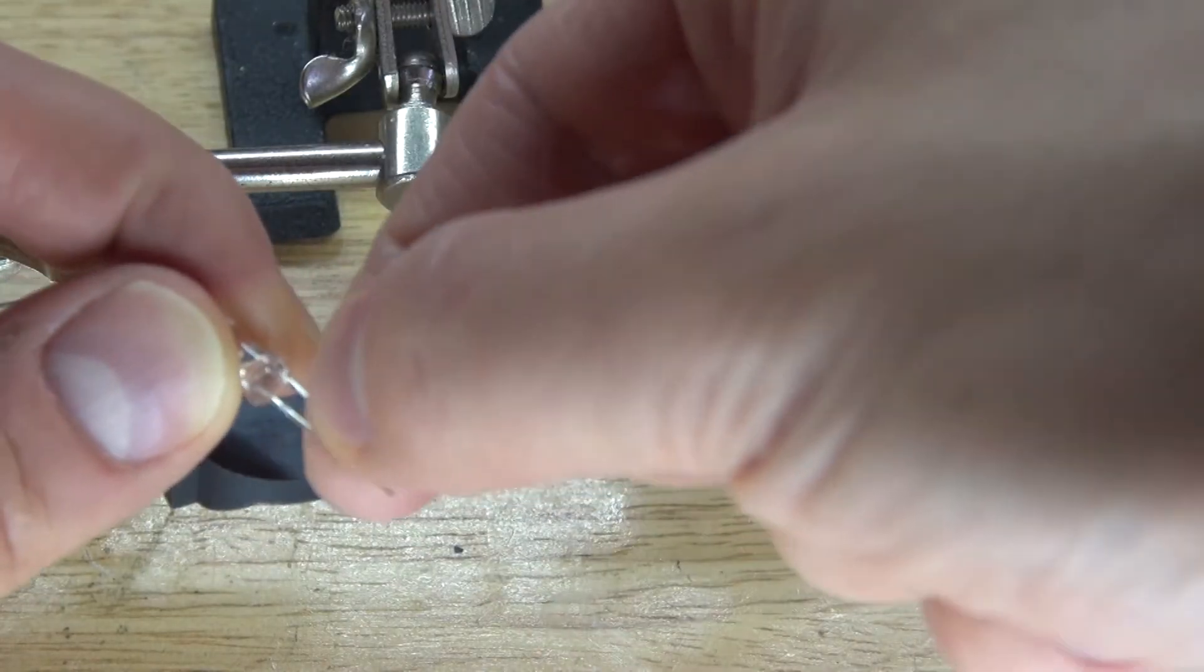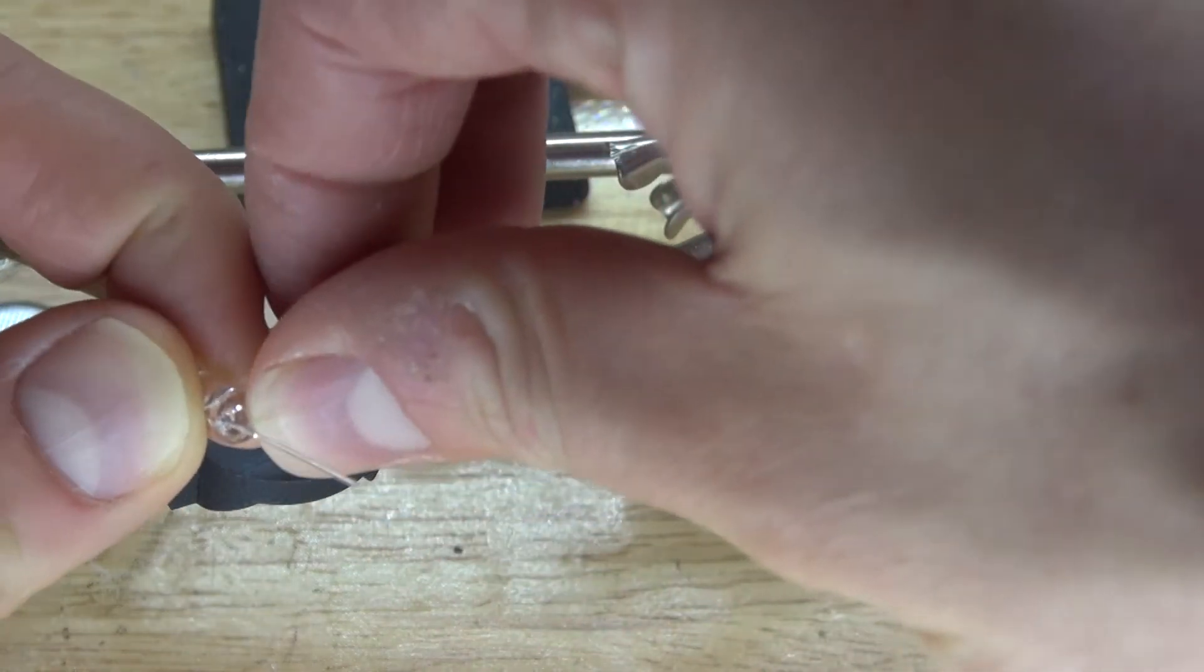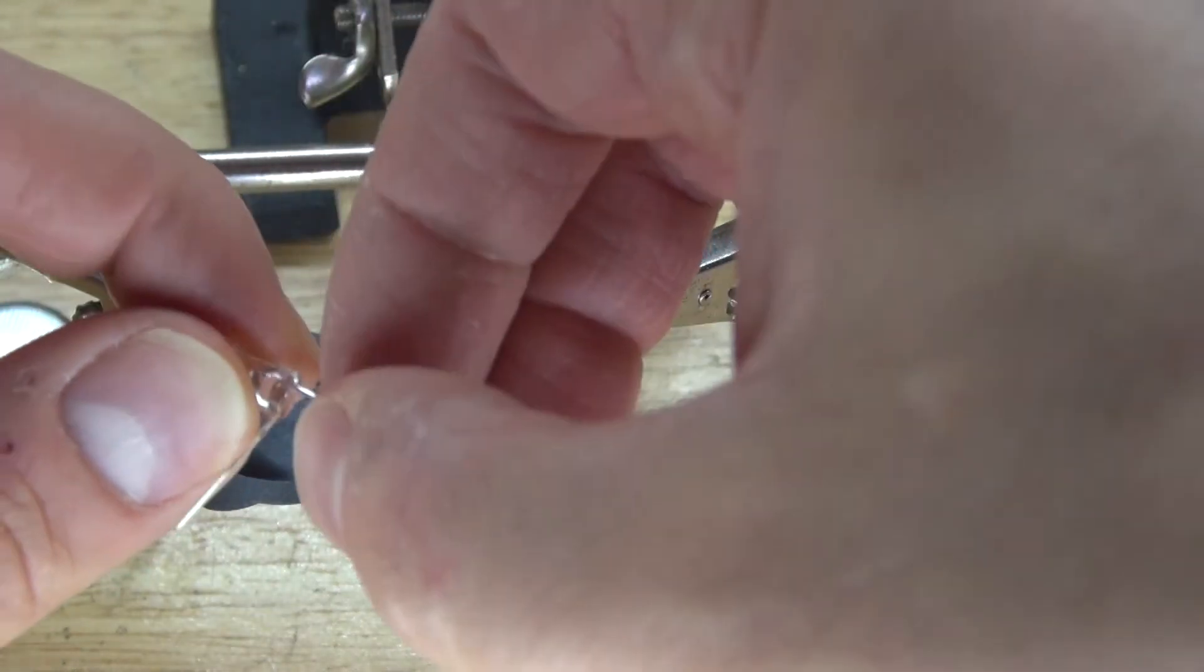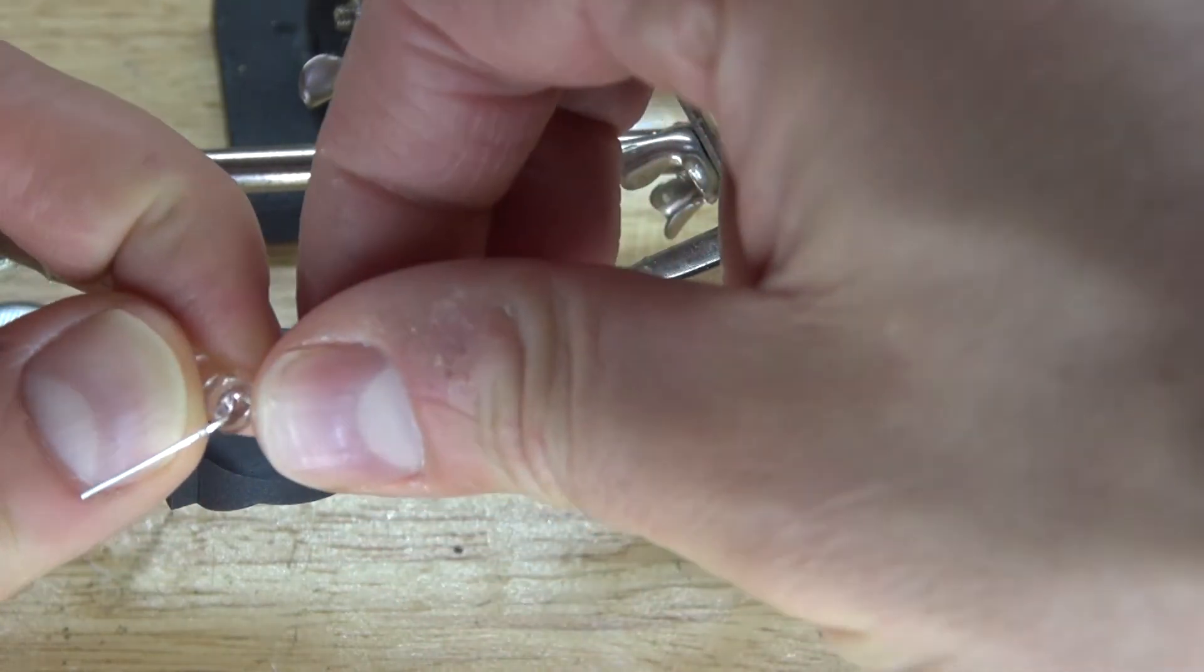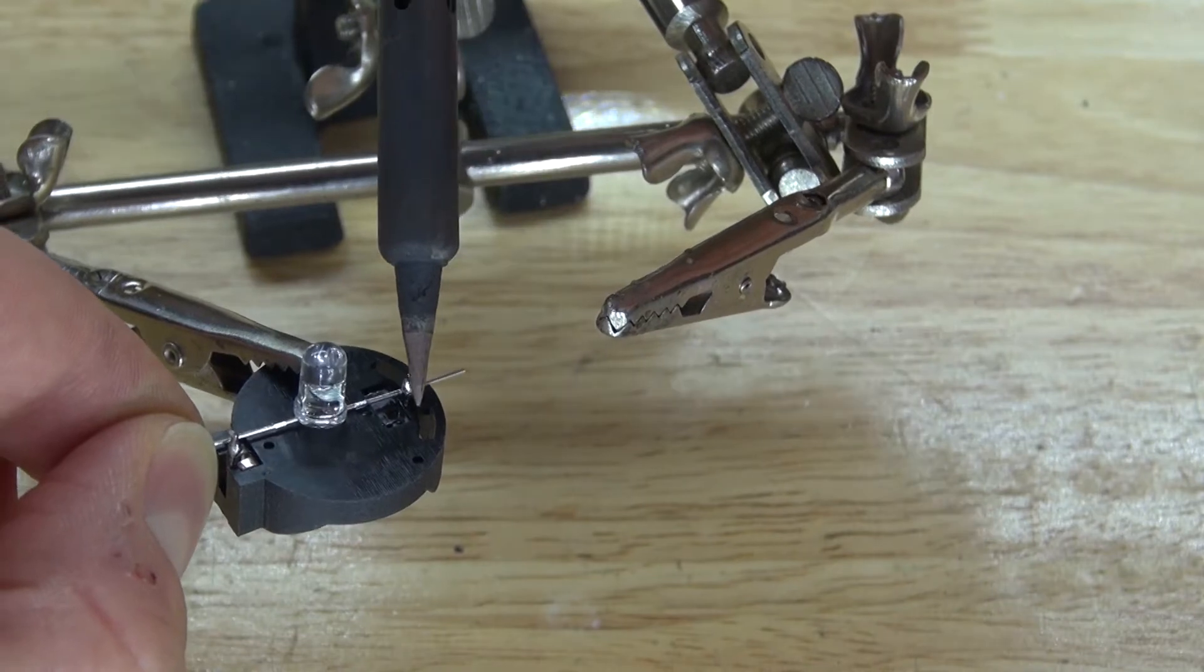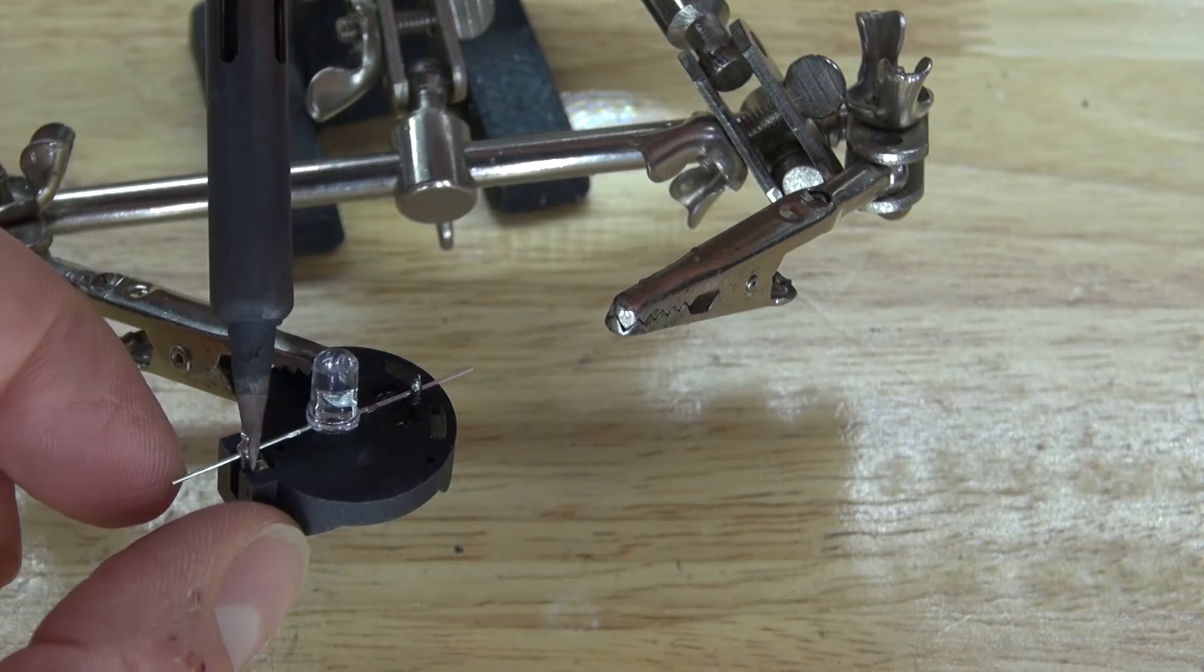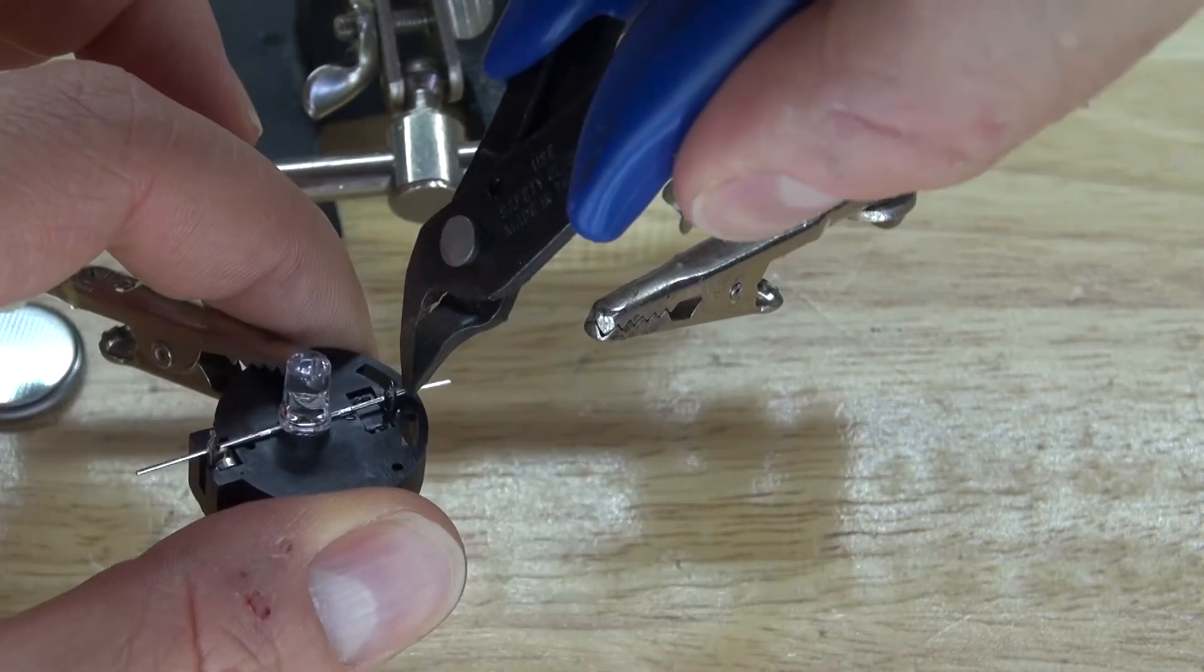Next I want to take the LED and bend the leads of the LED where the cathode touches the negative and the anode touches the positive of the button cell battery holder. Bend the leads just like this. There we go, solder the cathode to negative and solder the anode to positive. Cut off the excess.